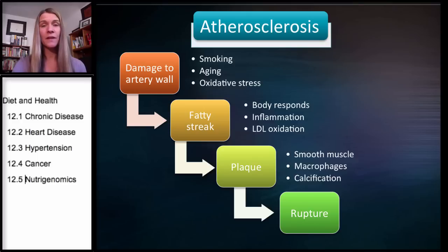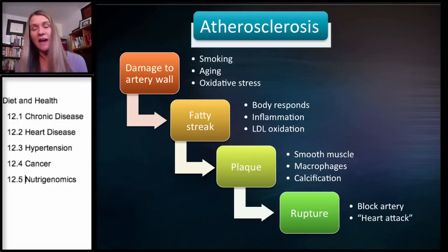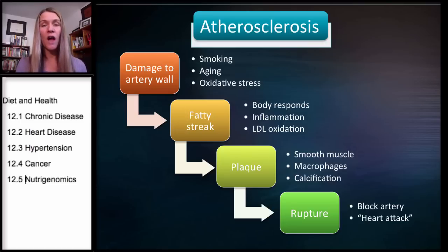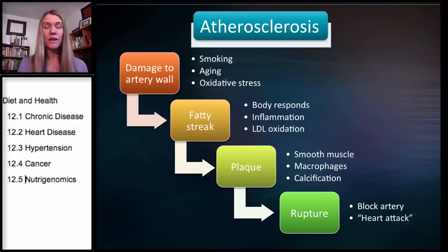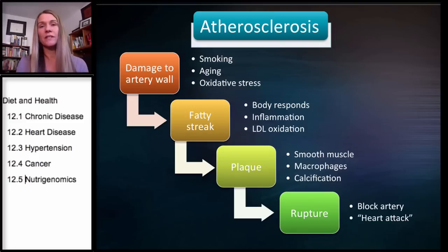A heart attack is actually caused by a rupture of the plaque. The plaque becomes unstable, ruptures, travels downstream through the arteries to a smaller artery, and blocks blood flow. That means oxygen can't get to the heart tissue. If the beating heart doesn't get any oxygen, it starts to die and can't do its job — that's why it's so dangerous.